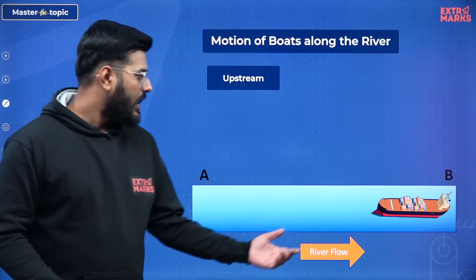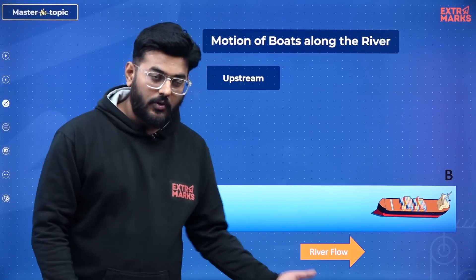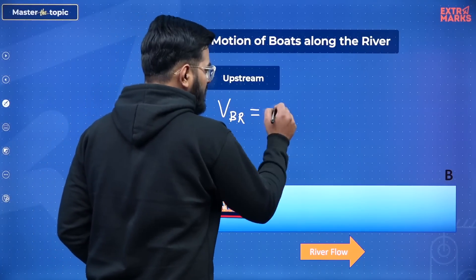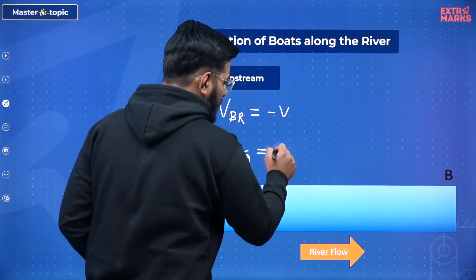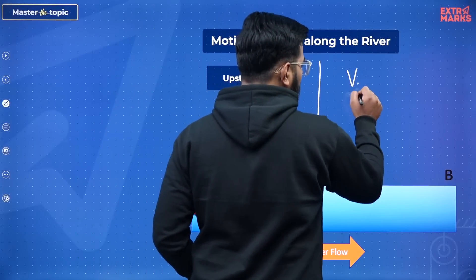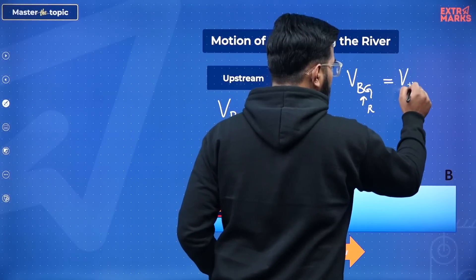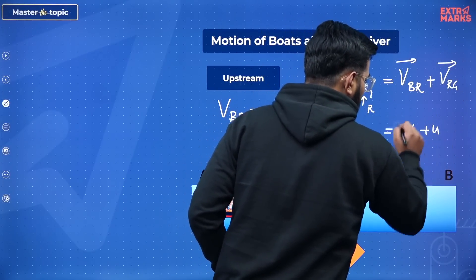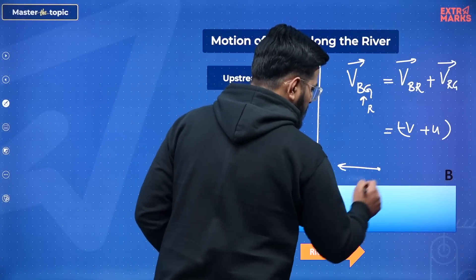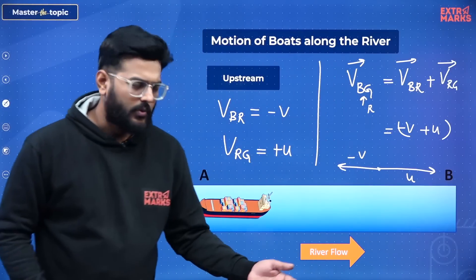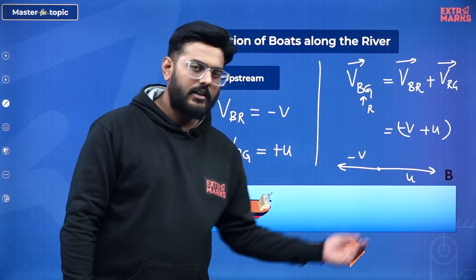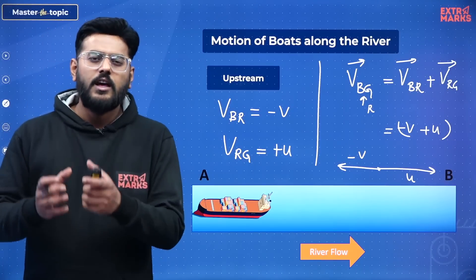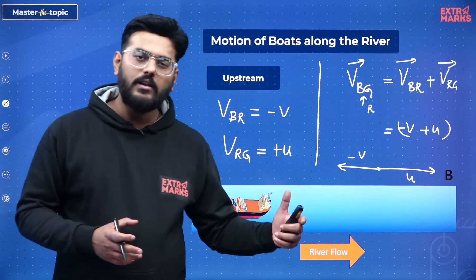The other case is upstream motion, where the boat moves opposite to the direction of river flow. Here, the velocity of boat with respect to river is minus V, and velocity of river with respect to ground is plus U. The velocity of boat with respect to ground is again found by introducing the river frame: it equals velocity of boat with respect to river plus velocity of river with respect to ground. Since V is opposite to U, the result depends on their magnitudes. If V is greater than U, the boat moves in the forward direction. These two cases cover all aspects when the boat's motion is along or opposite to river flow.